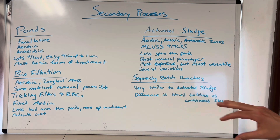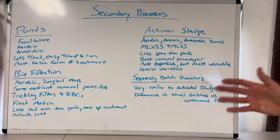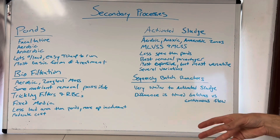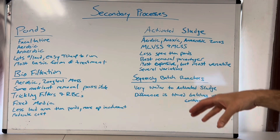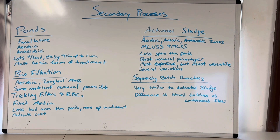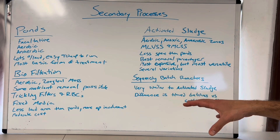Some nutrient removal is possible if you're strategic. I listened to a lecture about a guy who allowed overgrowth on one part of his trickling filter, which created an anoxic zone — good for him. That sounds like a level of complexity I'm not interested in unless I have to, but it was really cool that they were able to do that.